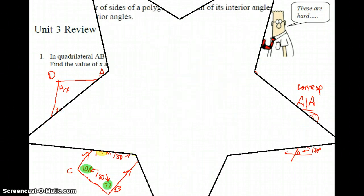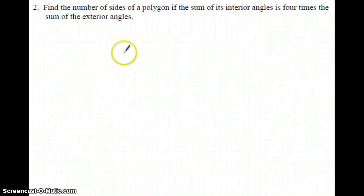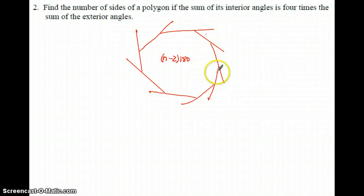Okay, number two, find the number of sides of a polygon if the sum of its interior angles is four times the sum of the exteriors. Well, I don't know how many sides the thing has, so let me just draw a crazy polygon with a bunch of exterior angles drawn. I don't know how many exterior it has, but I know the sum of the inside angles is supposed to be n minus 2 times 180 by the formula on the provided sheet. The sum of all of these angles, however many there are, has to be, no matter how many sides there are, has got to be 360. That's another theorem. But I know that this is four times this.